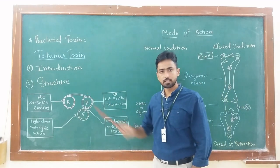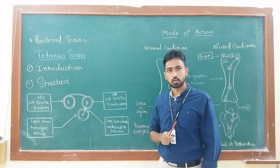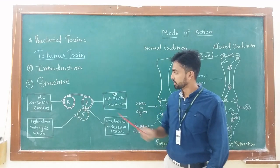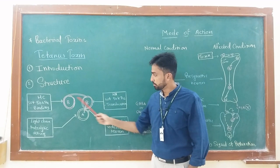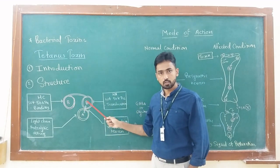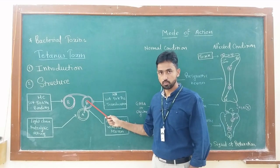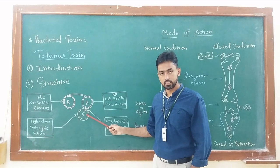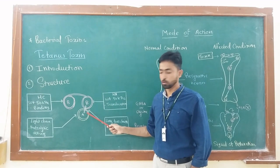Now in the structure we know that the toxin has 150 kilodalton molecular weight polypeptide chain. The toxin has two subunits, B subunit and A subunit. The B subunit of the toxin is called the heavy chain with molecular weight 100 kilodaltons, while the A subunit of the toxin is called the light chain with molecular weight 50 kilodaltons.